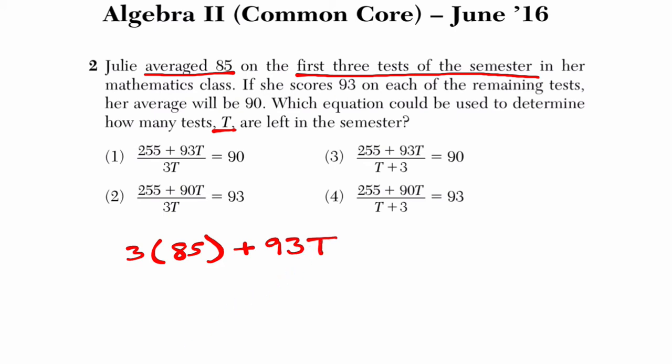For example, if she scored 93 on two tests, that would really be like 93 times 2, and that would be 93 plus 93. If she scored 93 on three tests, it would be 93 times 3. And that would be the same as getting 93 and 93 and 93. So the idea is we're expressing that relationship through multiplication.